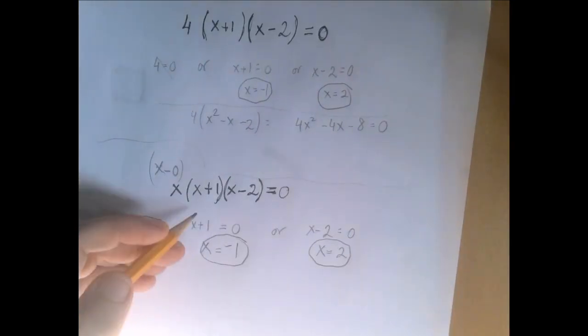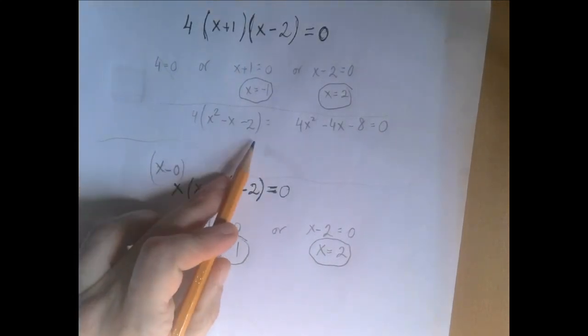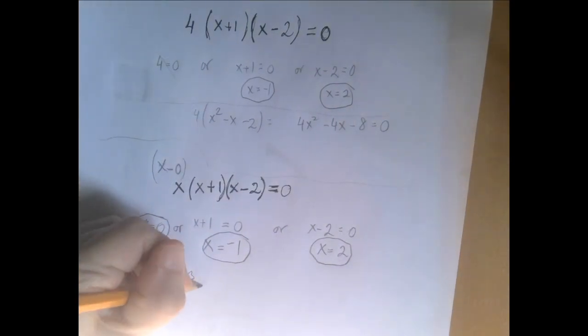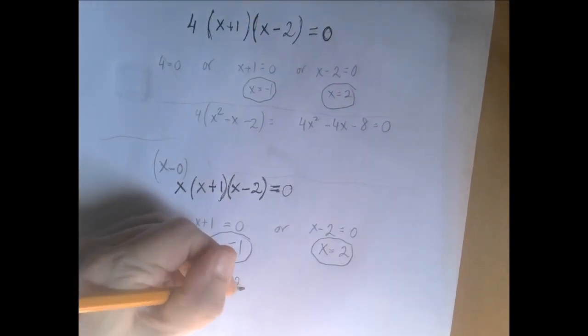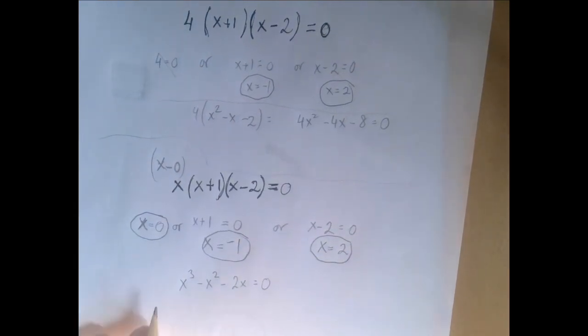The second one, on the other hand, when we multiply the same two binomials, we get x squared minus x minus 2, but it's getting multiplied by x. So what we have is x cubed minus x squared minus 2x equals zero. That is a degree 3 equation. That can have up to three solutions.